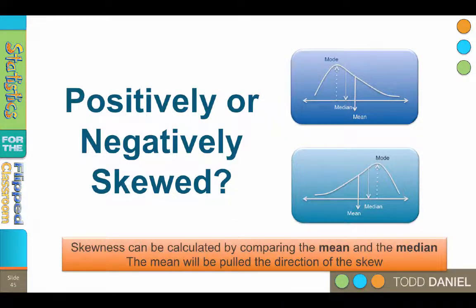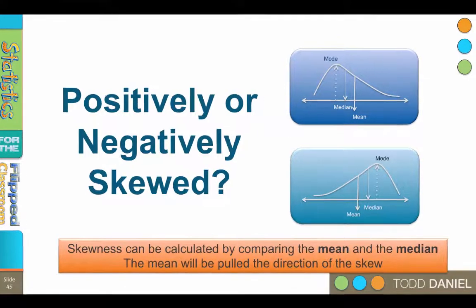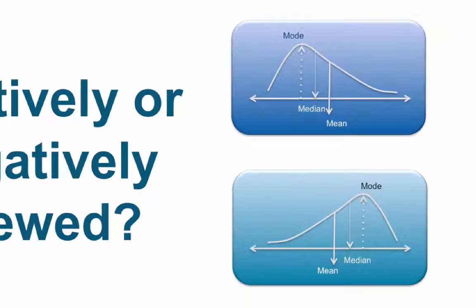Both of these curves show us what happens to the mean and the median in the case of skewness. Both of them are pulled in the direction of the outlier, but the mean is pulled further. That is because the mean is more susceptible to the outlier that is causing the skewness.